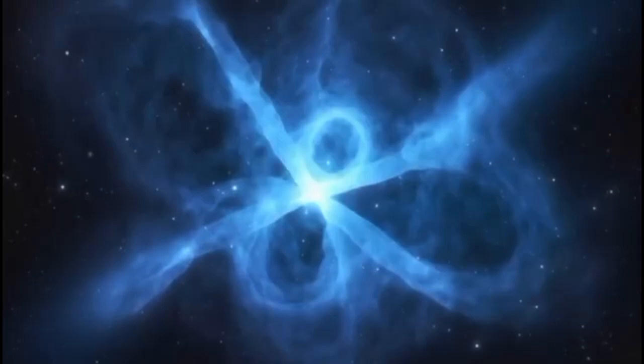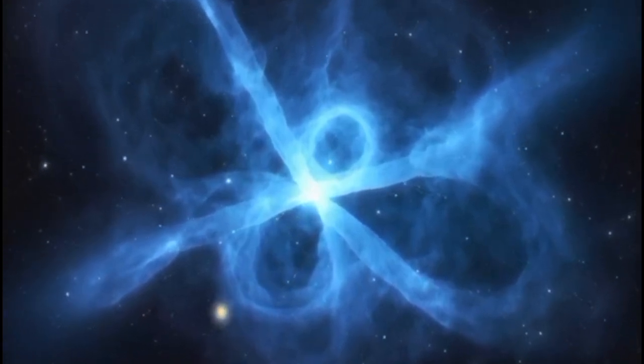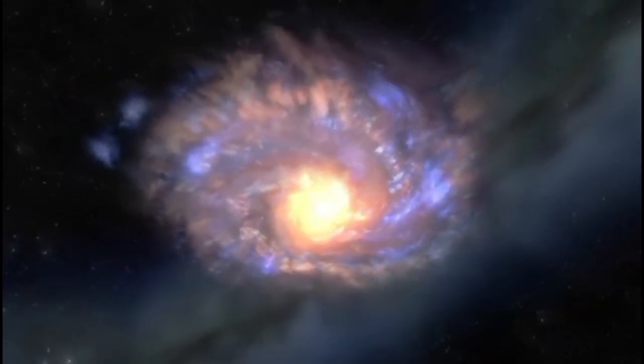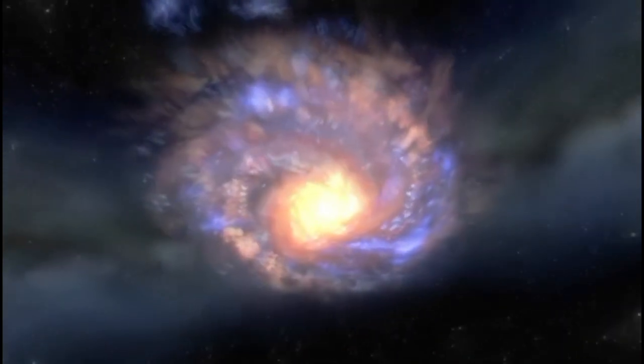General relativity introduces black holes, regions where gravity is so strong that even light can't escape. The edge of a black hole is called the event horizon, the point of no return. Once anything crosses it, it's pulled in forever.